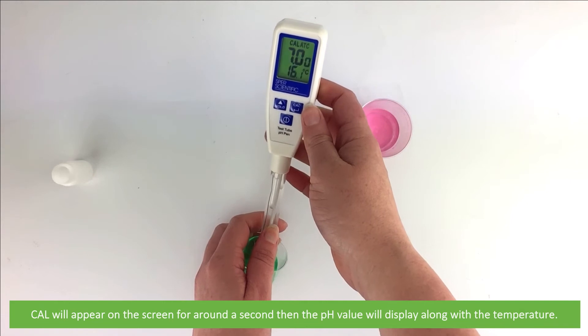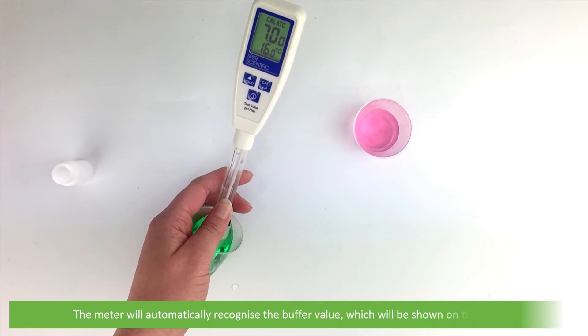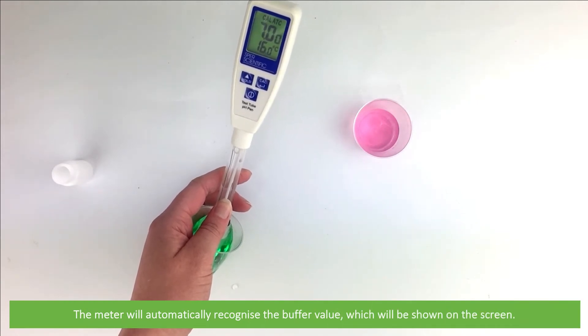CAL will appear on the screen for around a second, then the pH value will display along with the temperature. The meter will automatically recognize the buffer value which will be shown on the screen.